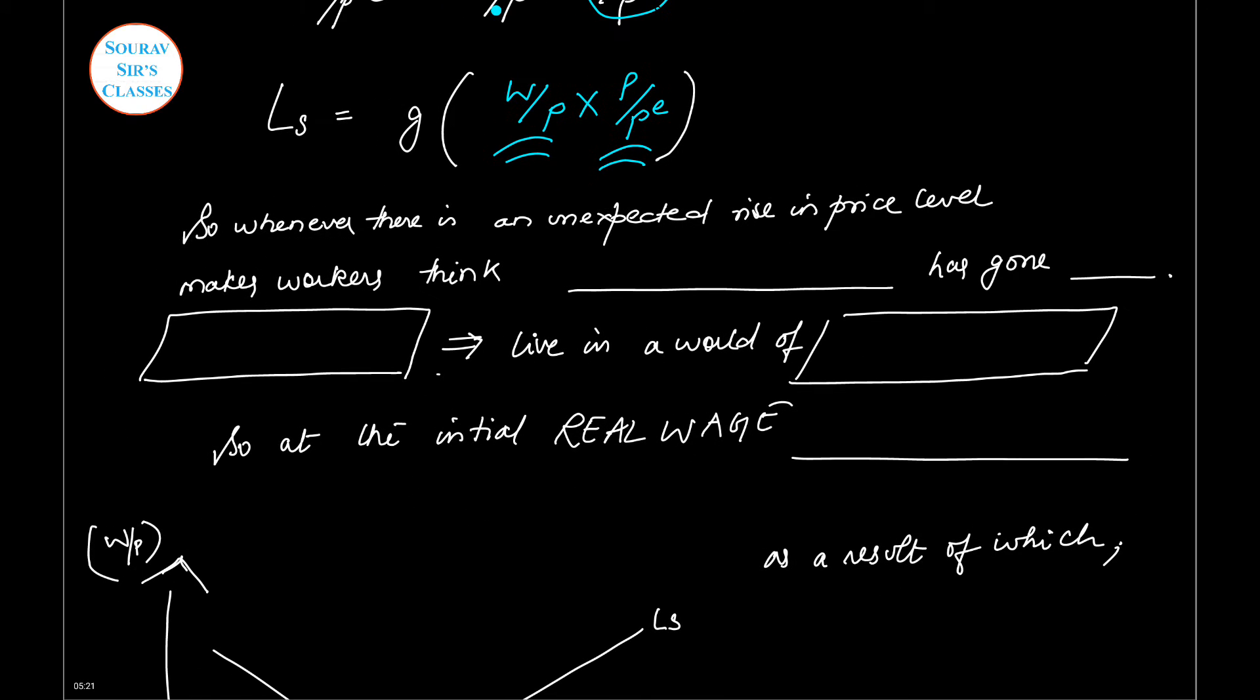So what we find is that whenever there is an unexpected rise in price level, it makes workers think or feel that their real wages has gone up. So this is the mistake they're making, and this will actually be false. This is not true, this is not happening. They are thinking it is happening, so they are in the world of illusion.